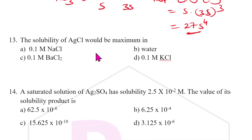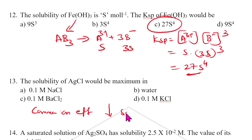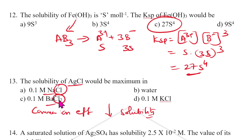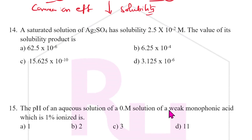Thirteenth question: solubility of AgCl is maximum in which solution? Remember, the common ion effect decreases solubility. Where there is no common ion present — i.e., in pure water — the solubility will be maximum. The answer is water.